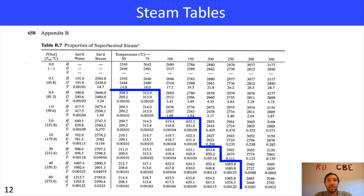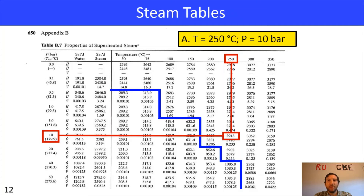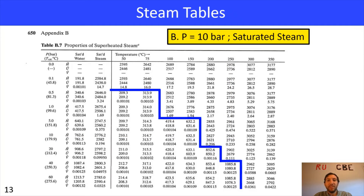Going back to our steam tables, for state A we look for 250 degrees Celsius and 10 bar — find the temperature, find the pressure, go across — and we get an enthalpy of 2943 kilojoules per kilogram. Moving on to state B, we have 10 bar and saturated steam. We look for saturated steam, then look for pressure 10 bar, go across the table, and find it's 2776.2 kilojoules per kilogram.